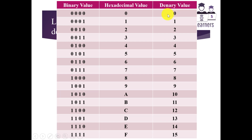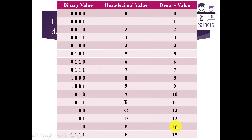The decimal values start from 0 and end at 15, meaning a total of 16 values are used. In the case of hexadecimal, values from 0 to 9 are the same as decimal, but at 10 it becomes A, 11 is B, 12 is C, 13 is D, 14 is E, and 15 is F. These are the hexadecimal values equivalent to the decimal values.